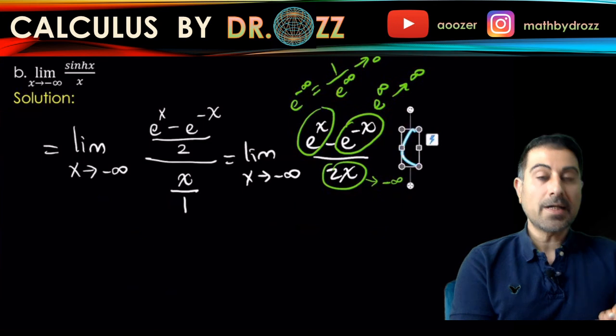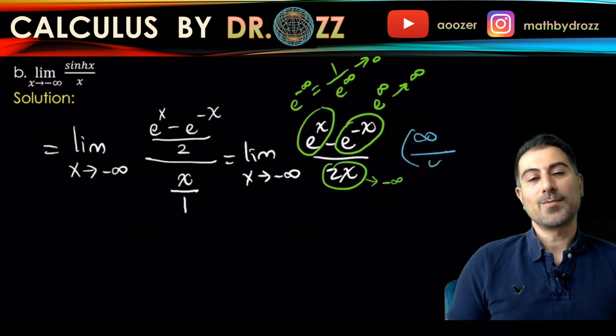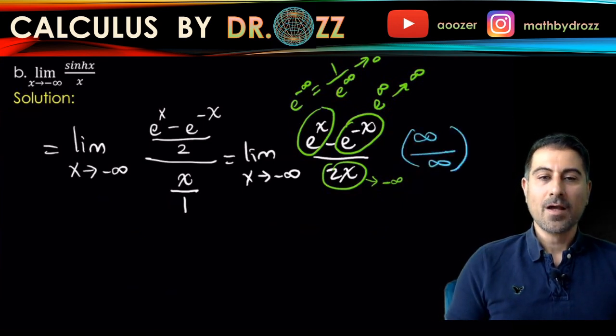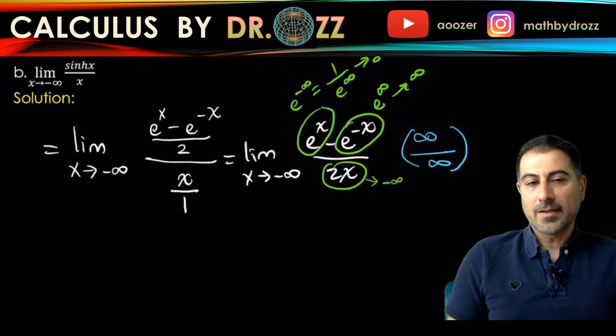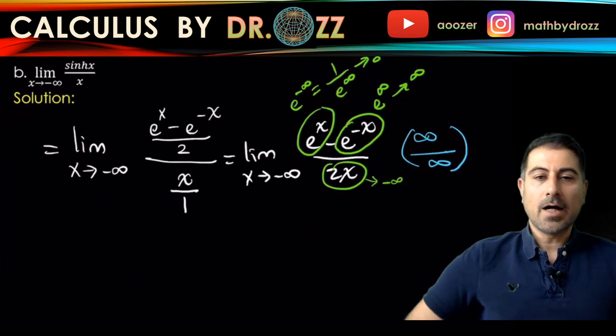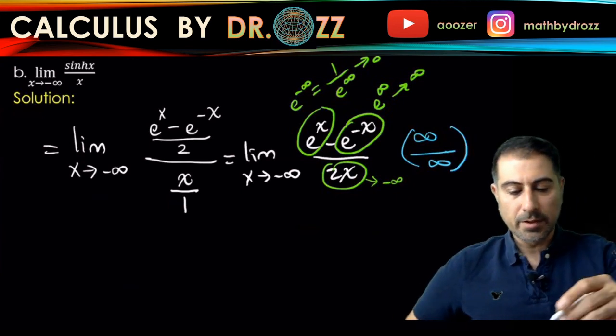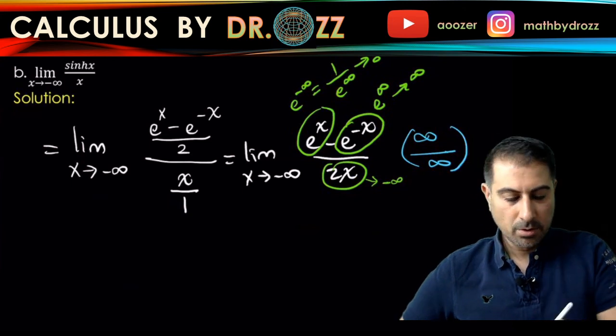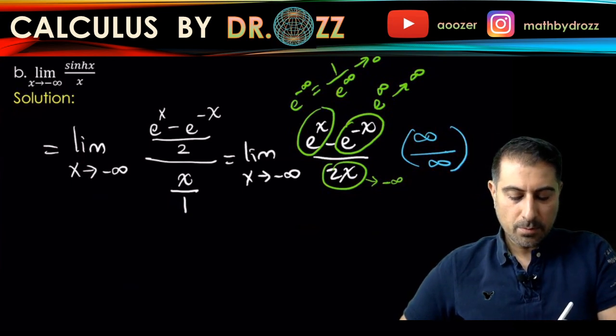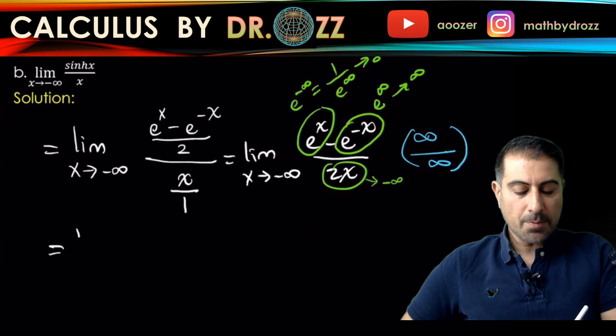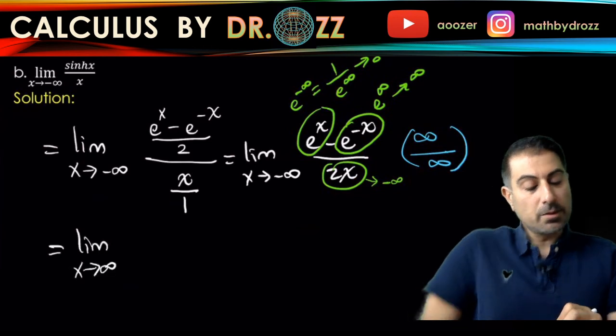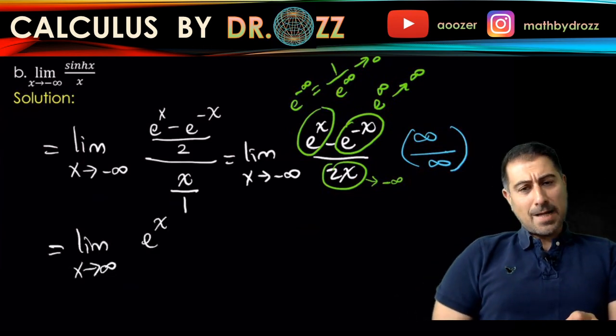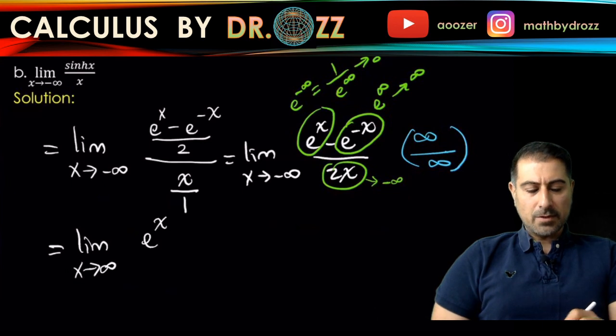It's an indeterminate form. So what we do in this case is utilize L'Hôpital's rule. Let's see if it's going to work. The derivative of the top is e to the x; the derivative of e to the minus x is minus e to the minus x by using the chain rule.